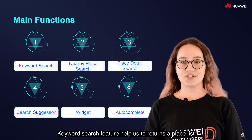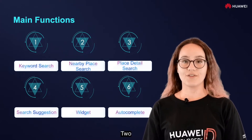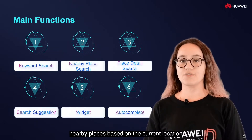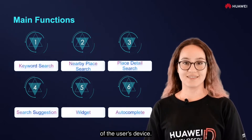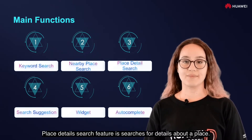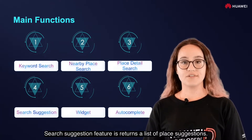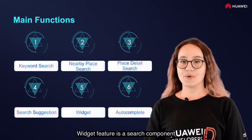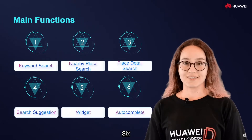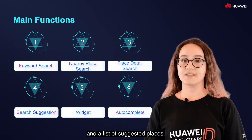1. Keyword search feature helps return a place list based on keywords entered by the users. 2. Nearby place search feature searches for nearby places based on the current location of the user's device. 3. Place details search feature searches for details about a place. 4. Search suggestion feature returns a list of place suggestions. 5. Widget feature is a search component of the built-in place search suggestion feature. 6. Autocomplete feature returns an autocomplete place and a list of suggested places.